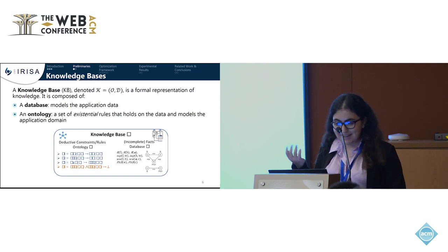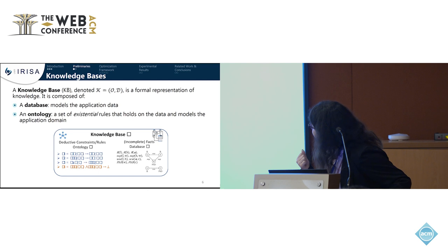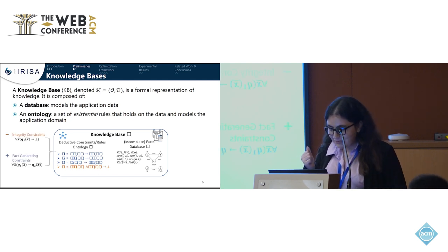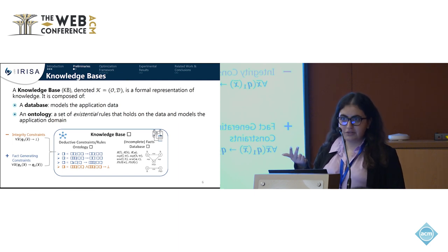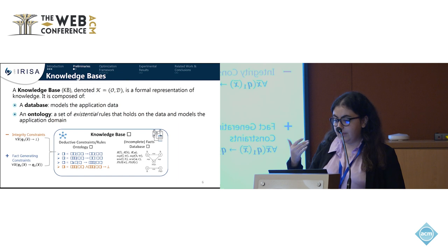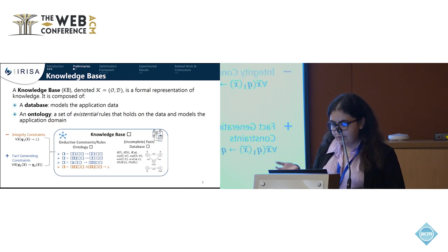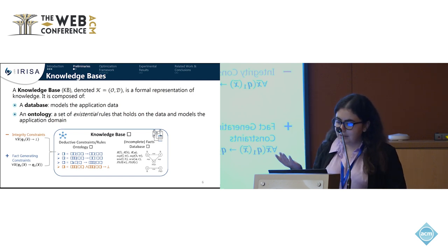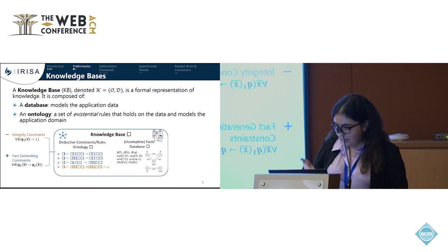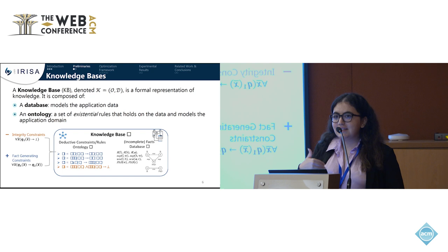We have an example of a knowledge base made of an ontology and a database. On the ontology side, we have four rules or constraints. We have three fact-generating rules, or positive rules, where the data is about PhD students and researchers and the interactions between them. We have a rule that says working with another person is a symmetric relationship, a subsumption relationship, and that a PhD student is necessarily supervised by someone who exists in the database.